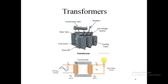Based on the star and delta connections on the primary and secondary sides, we have six different types of three-phase transformers. For example, if the primary is delta and the secondary is delta, we have a delta-delta transformer. If the primary is star and the secondary is delta, we call it a star-delta transformer.